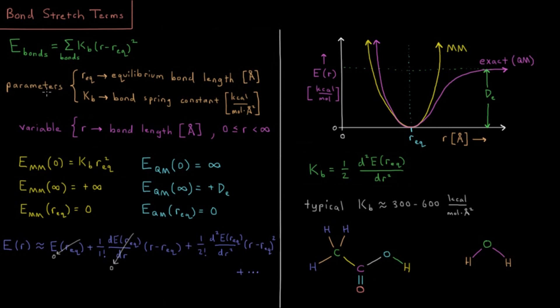As I mentioned, we have two parameters per bond. We have the equilibrium bond length, typically in units of Angstroms, and the bond spring constant, typically in units of energy per distance squared, because we have distance squared here, energy there. This needs to be energy per distance squared.